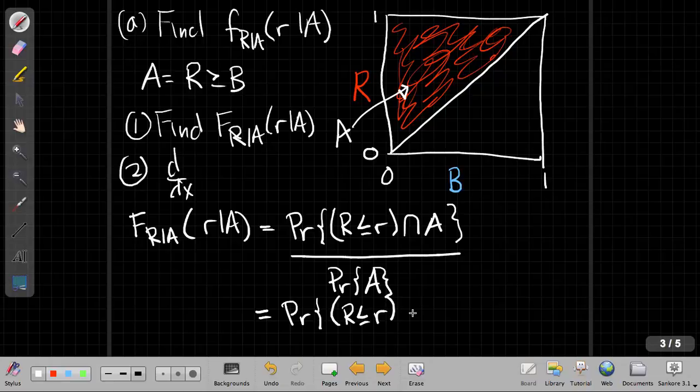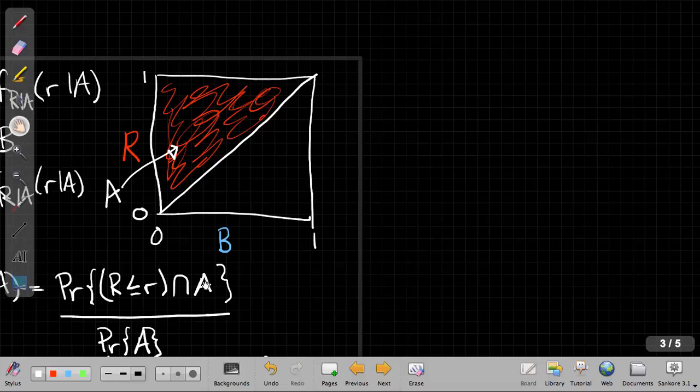So this is going to be a function. I should have pointed that out earlier. This is going to be a function of little r, because it's a distribution. But we're saying I'm looking for the intersection of these two events, the probability of that intersection.